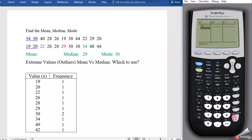We're going to enter: 34 enter, 30 enter, 40 enter, 28 enter, 26 enter, 19 enter, 30 enter, 44 enter, 22 enter, 29 enter, 20 enter. So let's go back and make sure that all the numbers are correct: 20, 29, 22, 44, 30, 19, 26, 28, 40, 30, and 34.